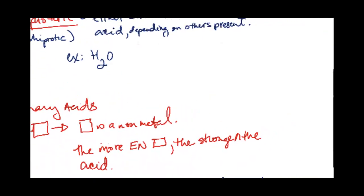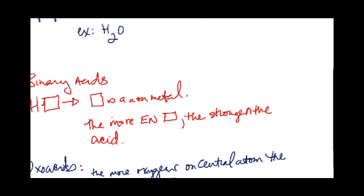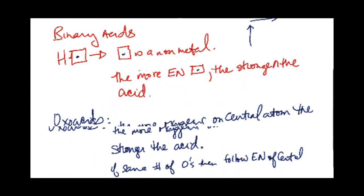Alright so there are some different types of acid we should consider. There's the binary acids where we have H and whatever in this box right here. This whatever has to be a non-metal and the more electronegative that is the stronger the acid. Okay so if you remember the trend of electronegativity goes up and increases to the right. Alright so compare the two elements that are in the place of this box here and the one that's further up and to the right is the stronger acid.